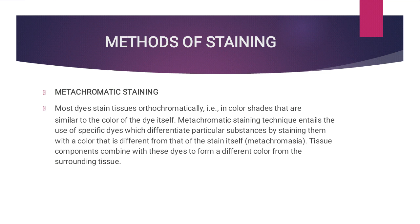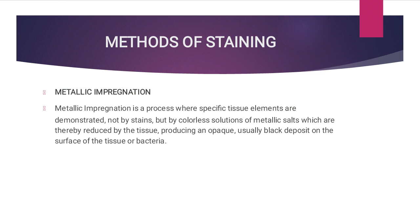Metachromatic staining is particularly employed for staining cartilages, connective tissues, epithelial mucins, mast cell granules, and amyloid. For metallic impregnation, specific tissue elements are demonstrated not by stains but by colorless solutions of metallic salts, which are reduced by the tissue, producing opaque — usually black — deposits on the surface of the tissue or bacteria. Instead of using stains, colorless solutions of metallic salts are used.